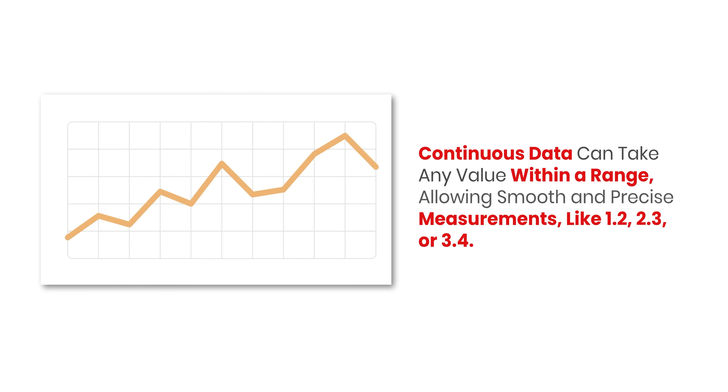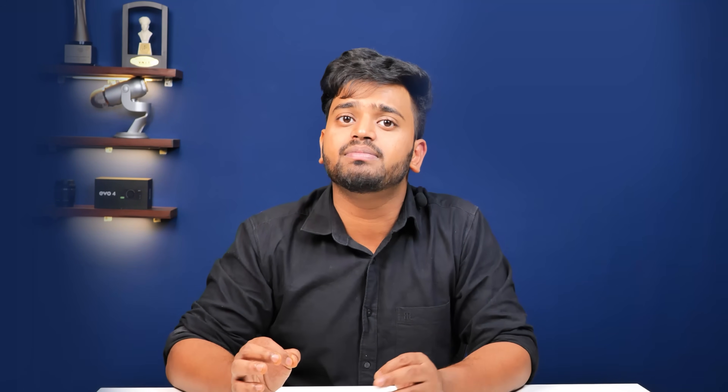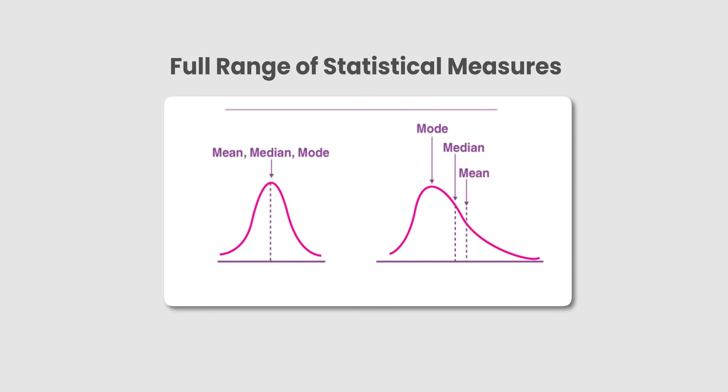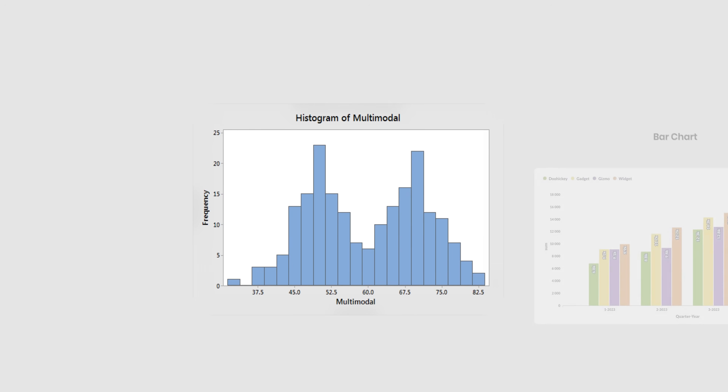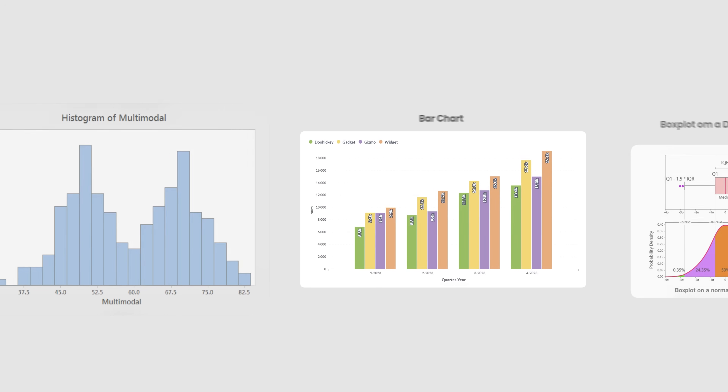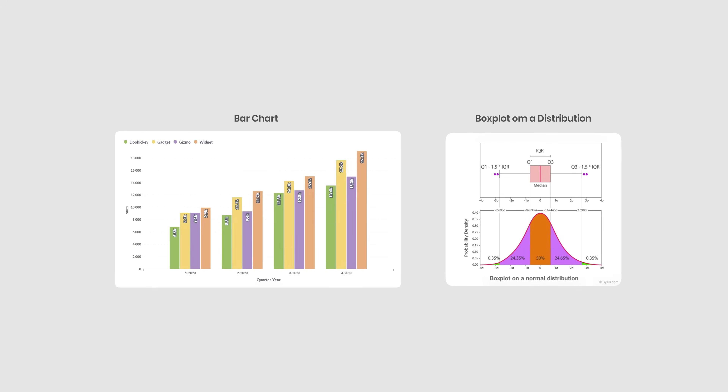This type of data is extremely powerful because we can apply a full range of statistical measures like mean, median, mode, and standard deviation, and also visualize it using histograms, bar charts, or box plots to understand the distribution and spread. In fact, most data science and machine learning models work on interval or ratio data because it's mathematically flexible.